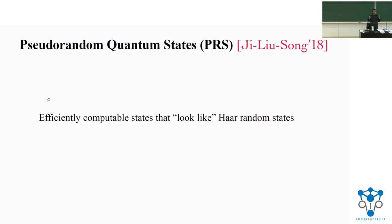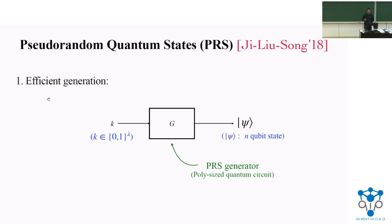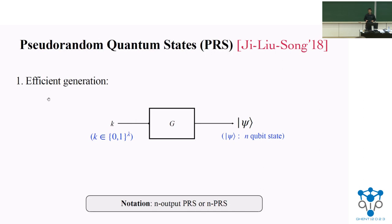I need to explain what pseudorandom quantum states are. Informally speaking, pseudorandom quantum states are states that are efficiently computable and computationally indistinguishable from Haar states. We require that they are efficiently computable, meaning there is a PRS generator, which is a quantum polynomial-size circuit that takes as input a classical string of length lambda and outputs a quantum state on n qubits. Whenever I use the notation n-PRS, it means the output length is n and the input length is lambda.